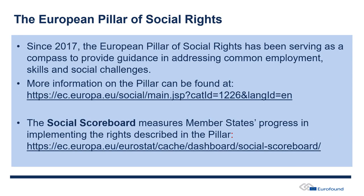Whenever we talk about social policies at the EU level, including those relevant for children and families, it is important to start by talking about the European Pillar of Social Rights. Because since 2017, this pillar has been the cornerstone providing guidance when it comes to dealing with socio-economic challenges. It is composed of 20 statements dealing with different areas of labour and social policy.